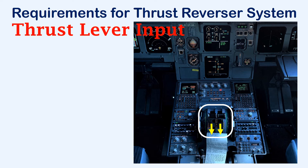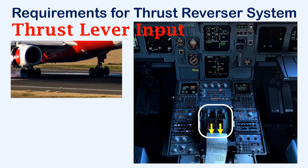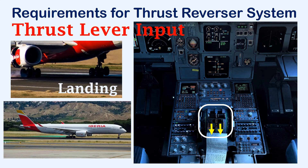The reverse thrust is selected as soon as the main landing gears touch the ground during landing. In case of a reject takeoff, the reverse thrust is immediately selected and the takeoff is aborted.